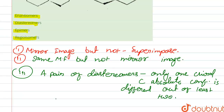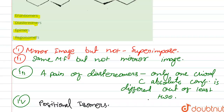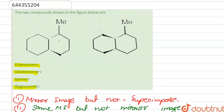Next are regioisomers. Regioisomers are positional isomers in which the position of the functional group varies. Now let's come to our question.